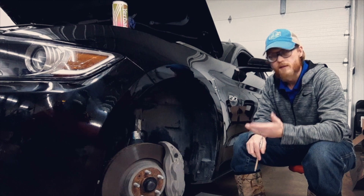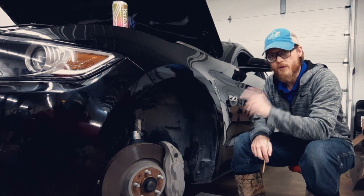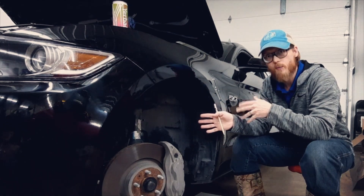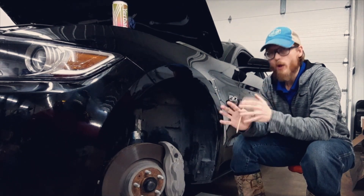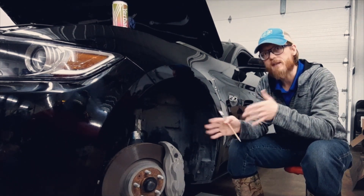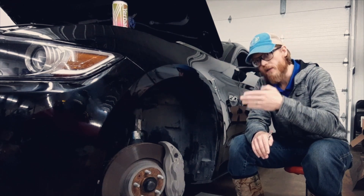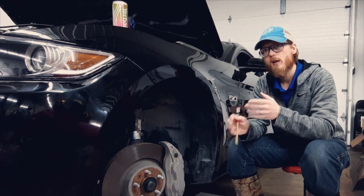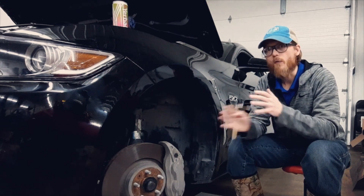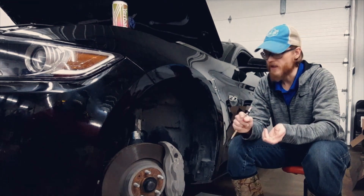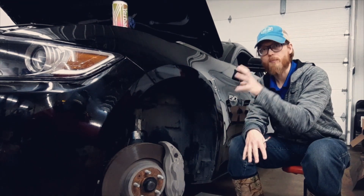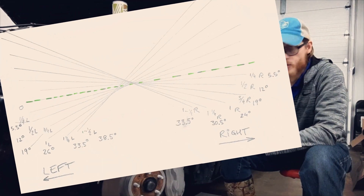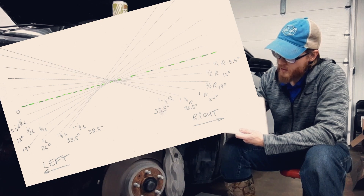You'll notice that we only traced this information on the driver's side wheel. It doesn't matter if you use the passenger side or driver's side — one wheel is enough. When you trace both steering all the way left and all the way right on one wheel, you'll have all the information of how those wheels interact with each other, because the other wheel is just going to be a mirror image of this.